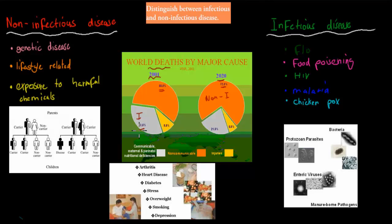For infectious diseases, it's 32% at the moment and is predicted to decrease to 21% by 2020. Most developed countries — such as America, countries in Europe, or Australia — have infectious diseases being quite low but non-infectious diseases being quite high, because many of them are lifestyle-related. Whereas in developing countries, such as parts of Africa or parts of Asia, infectious diseases are quite high compared to non-infectious, because sanitation isn't as good.